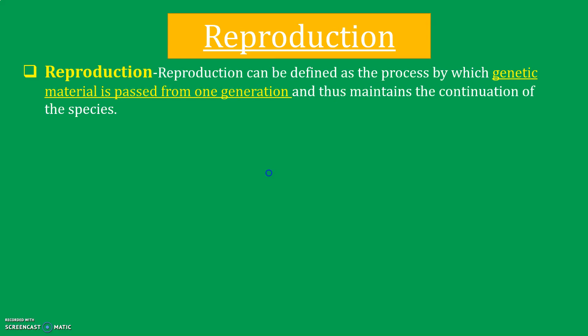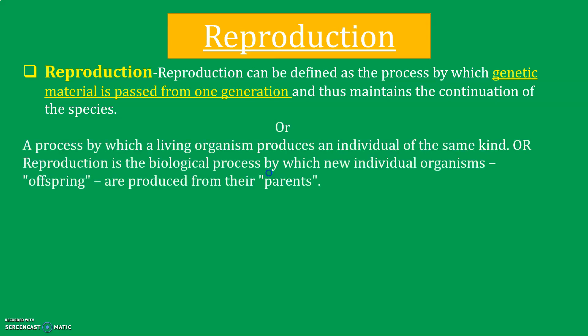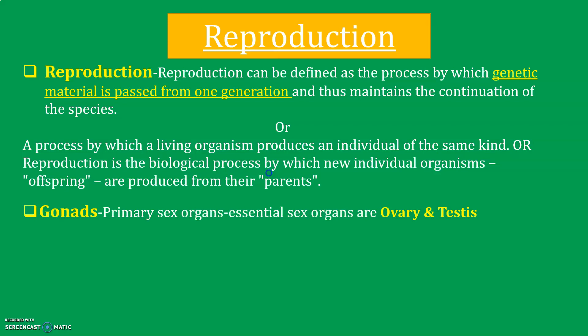What is reproduction? Reproduction means the transfer of genetic material from one generation to another for the maintenance and continuation of the species. Another definition: the transfer of offspring or gametes and the formation of a new living organism is called reproduction.